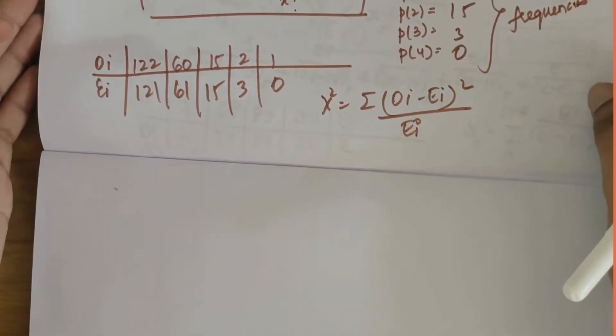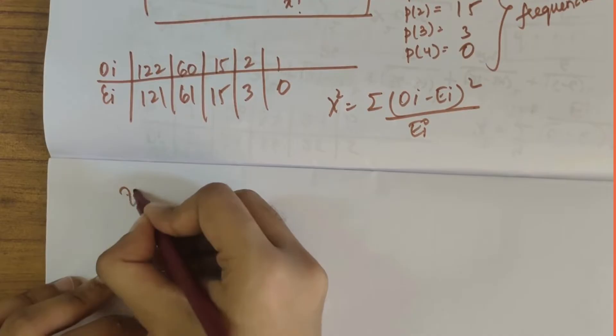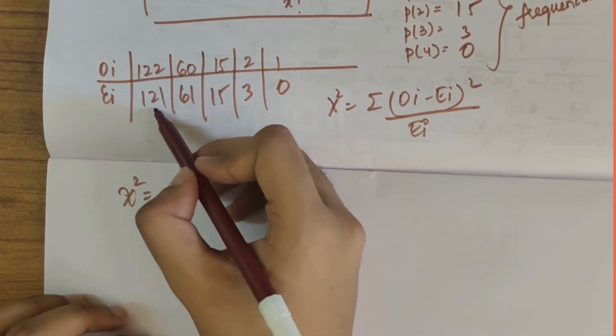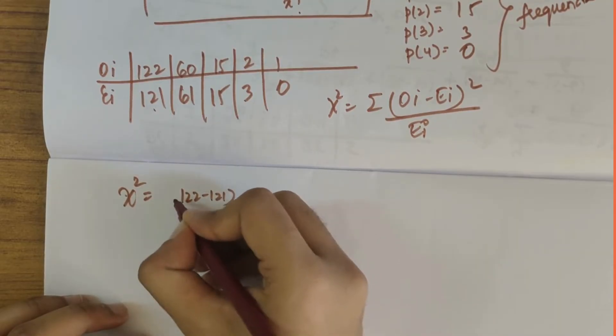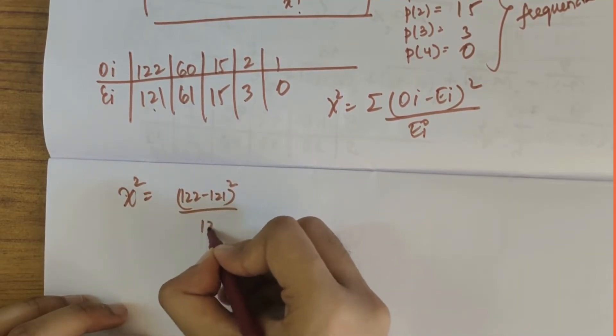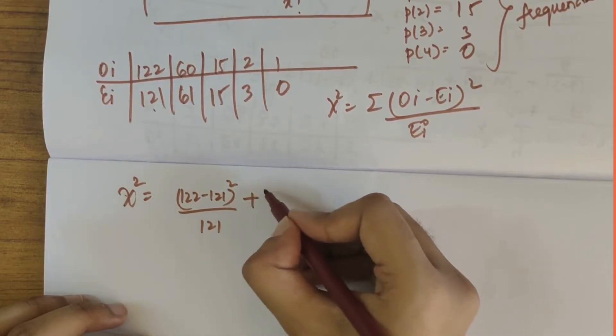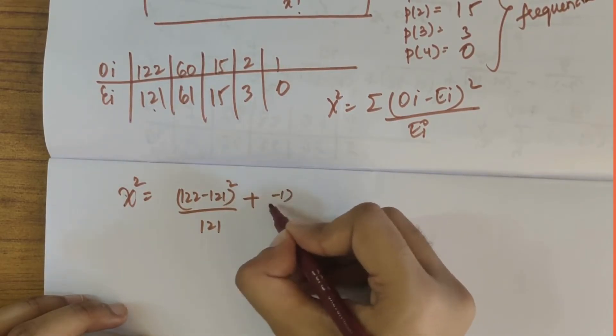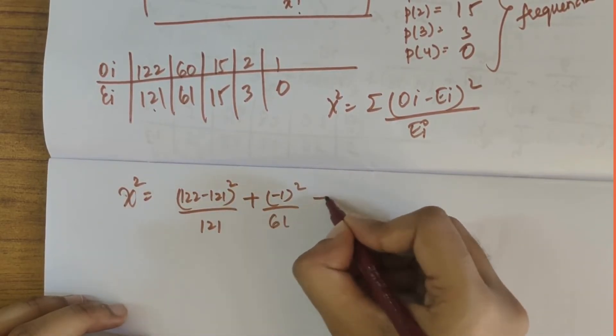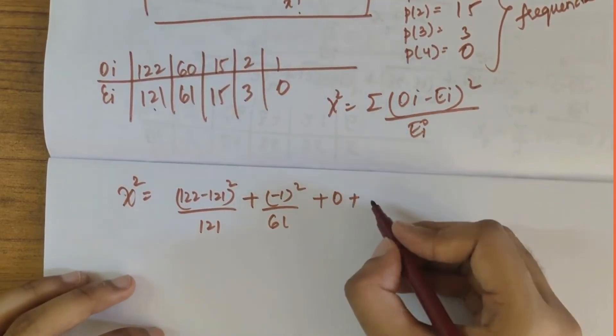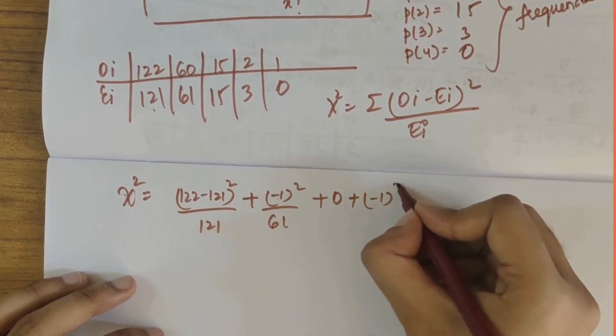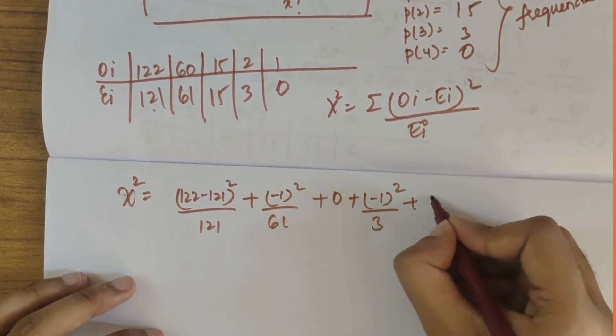We can write chi-square as: 122 minus 121 whole square divided by 121, plus 60 minus 61 that is minus 1 whole square divided by 61, plus 15 minus 15 is 0, plus 2 minus 3 is minus 1 whole square divided by 3, plus 0.